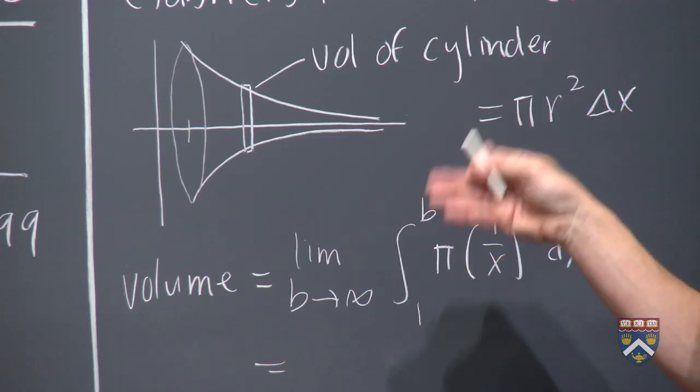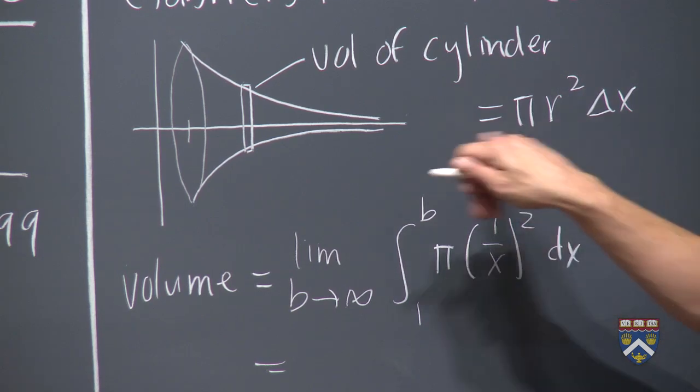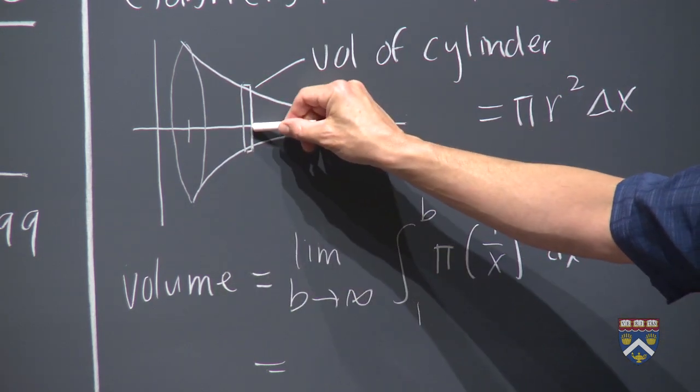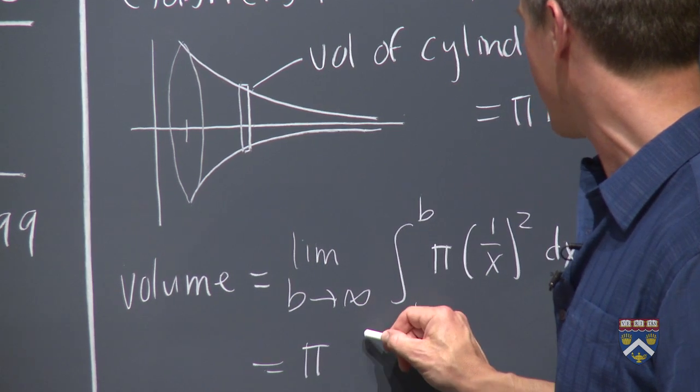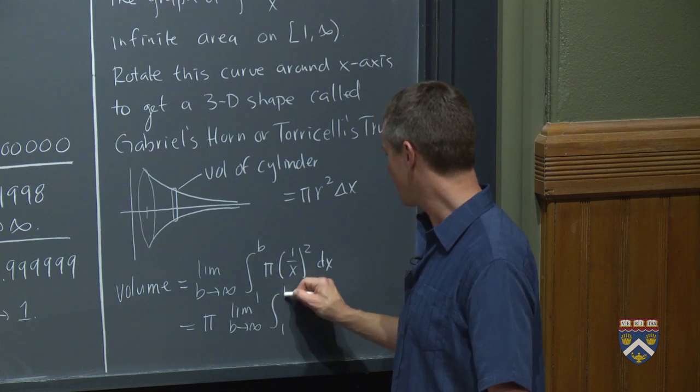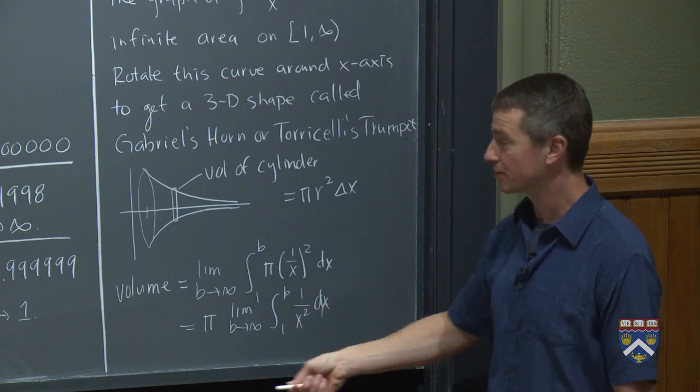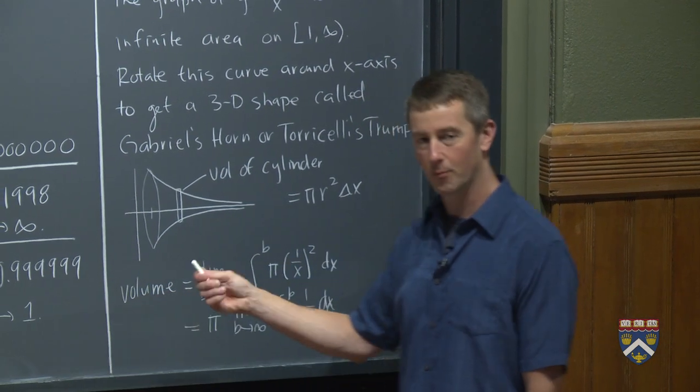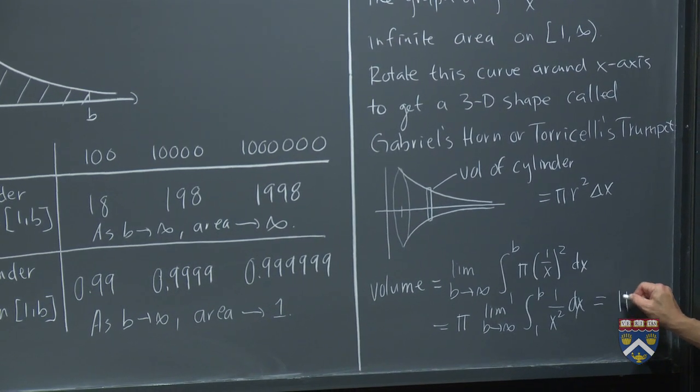But when we take the limit, when we do the integral, right, we take these rectangles getting closer and closer and closer to zero, the delta x we rewrite as dx. Our radius here is just the function, right? The distance from here to here is 1 over x. So pi times 1 over x squared. But we already know this is the same. I can pull the pi out front. And then I've got the limit as b goes to infinity, 1 over b, 1 over x squared dx. That's the integral we just computed there. 1 over x squared from 1 to b as b goes to infinity. Meaning, the volume of this is pi.